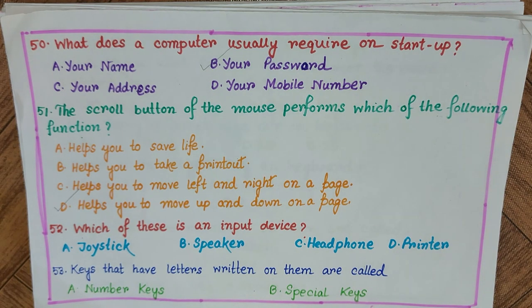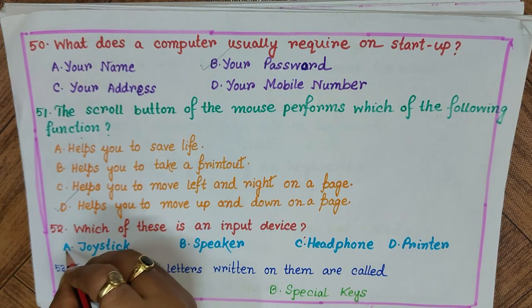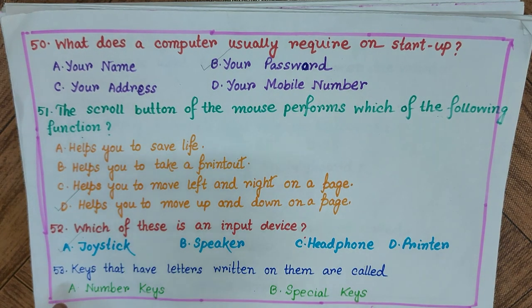Question 52: Which of these is an input device? A) joystick, B) speaker, C) headphone, D) printer. The answer is A) joystick.